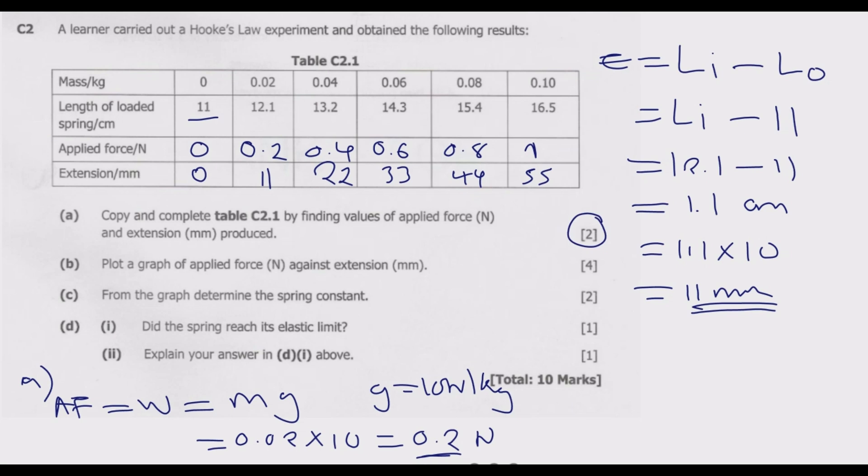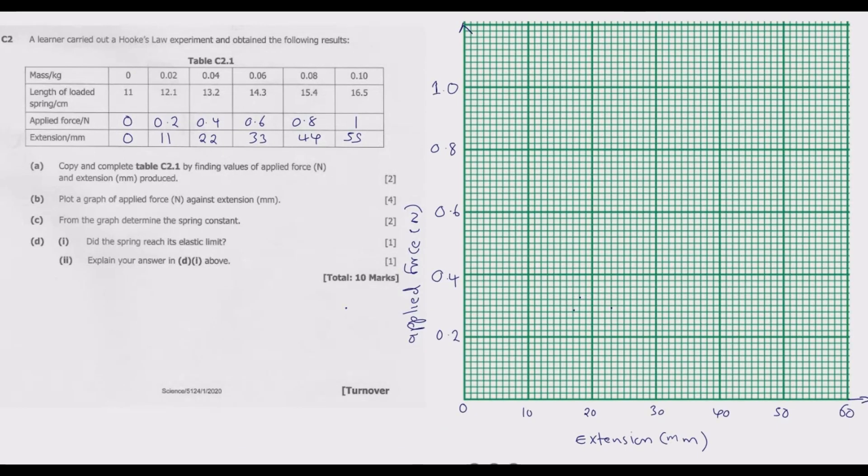Applied force is on the y-axis as is the case in physics, and extension will be on the x-axis. Applied force is increasing in intervals of 0.2, so the equal intervals make the graph much easier. Extension is increasing in intervals of 11. The standard graph would require us to do an interval of 10, so that will move from 0 to about 60.